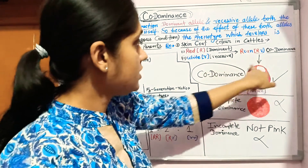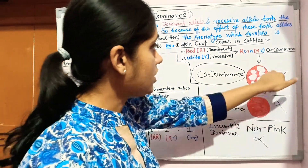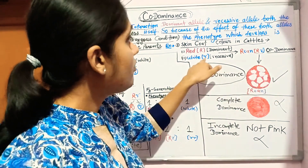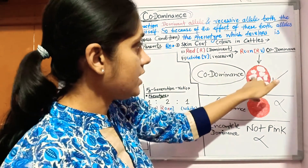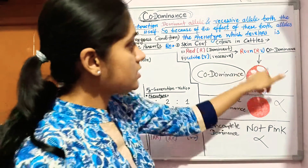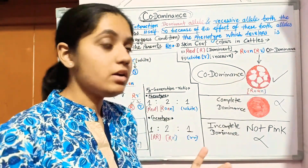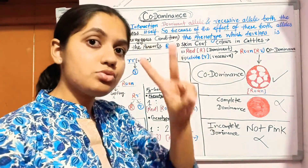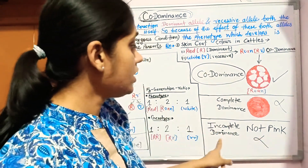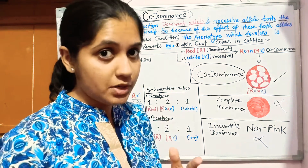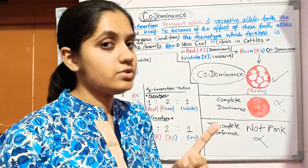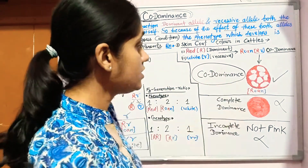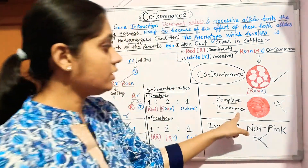The roan color means this red color is present and the white color is also present. In roan cattle, some hairs are red and some hairs are white. These two hair colors are not mixing with each other — it is not like incomplete dominance, where the colors blend to produce pink. The hairs are not pink; it is not a mix of red and white.